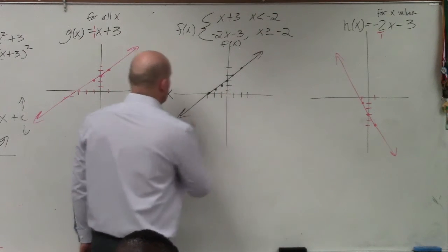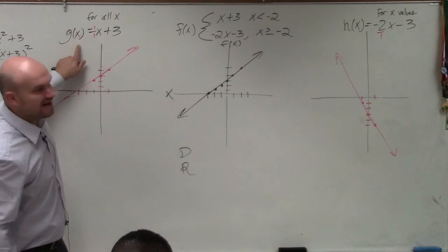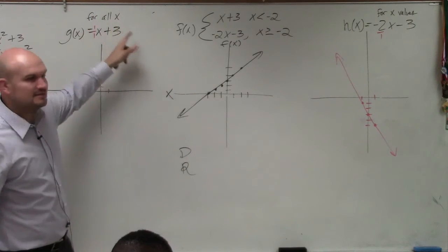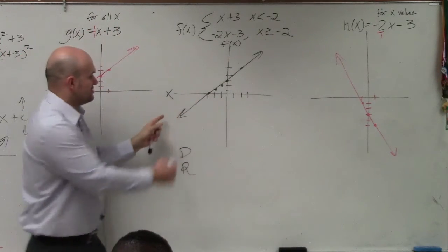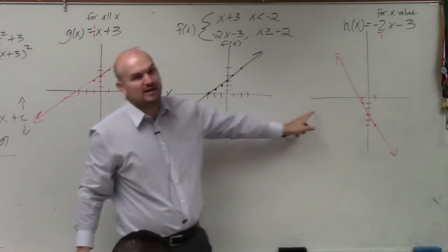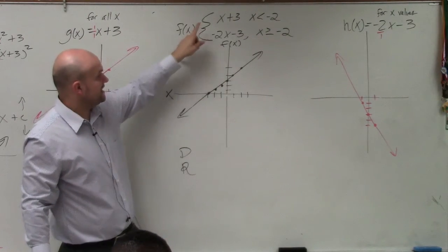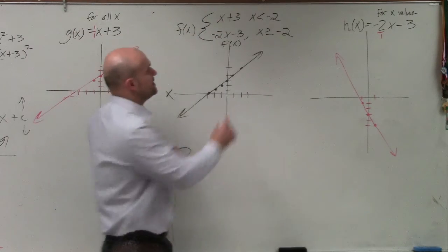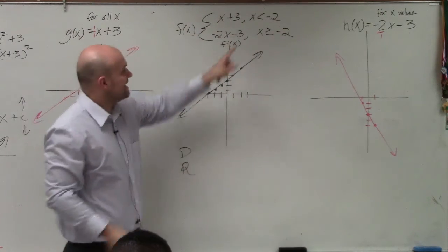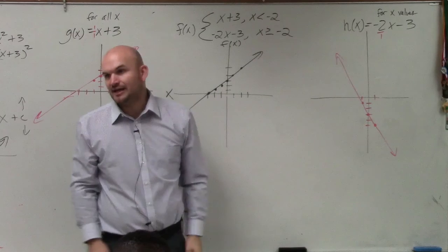Now, this graph for g of x is for all x. That means all x values. I go to negative infinity on my x values all the way to positive infinity on my x values, correct? But my function, my piecewise function, is saying graph x plus 3, but only for x values that are less than negative 2.